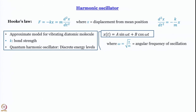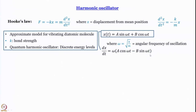To verify this trial solution, we differentiate it twice. The first derivative dx/dt gives ω multiplied by a cos(ωt) minus b sin(ωt). Since we are talking about eigenvalue equations, it is obvious that this is not an eigenvalue equation — this function is not an eigenfunction of the first derivative operator. What we are interested in is the second derivative.